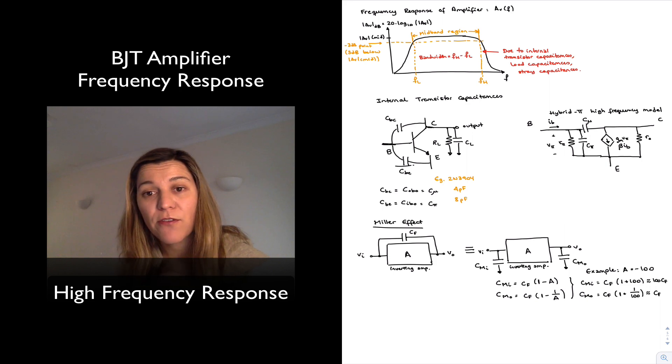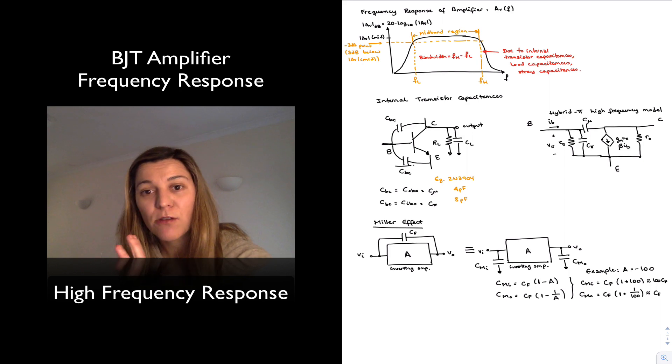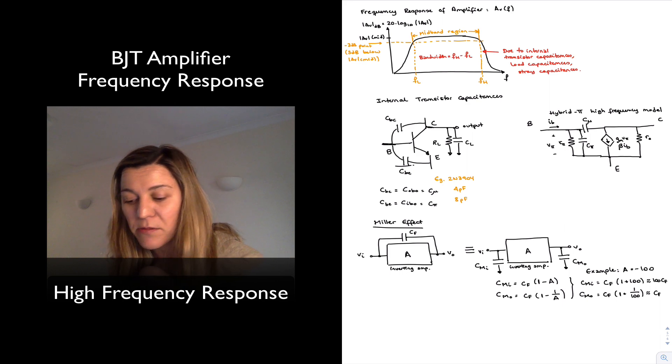As you can see, this is going to have a substantial effect in our frequency response, because we're now seeing a capacitor that is the gain times the value of the feedback capacitor. So even if you have a very small capacitor, let's imagine CBC, the internal capacitance of my transistor as we previously saw, is in the order of 4 picofarads.